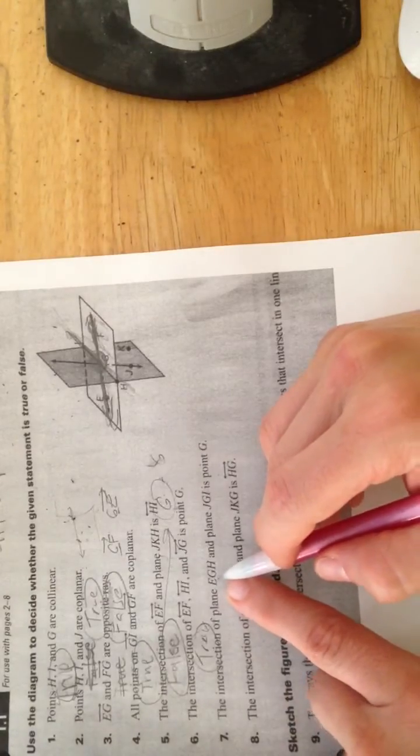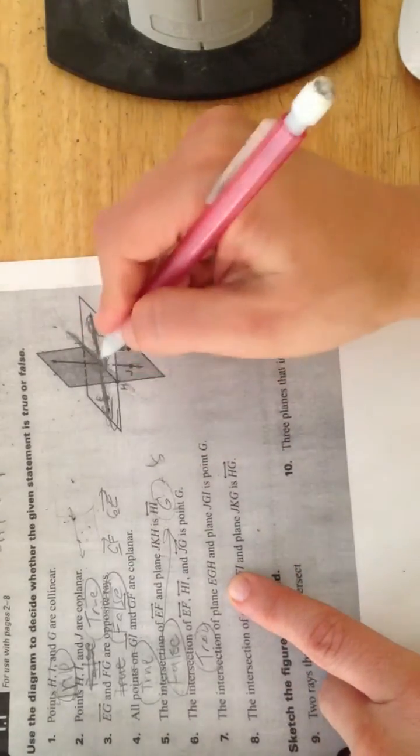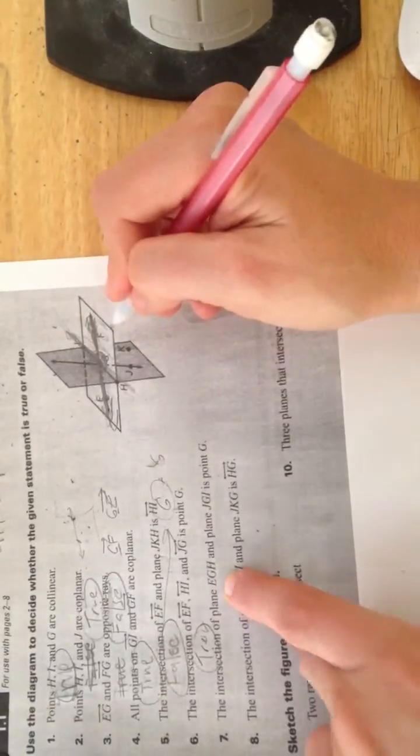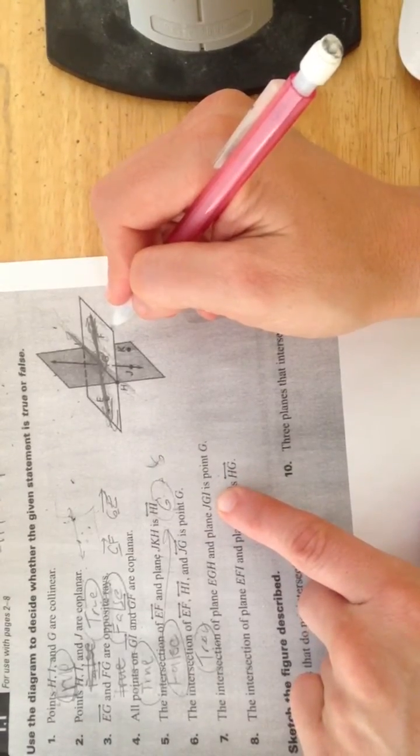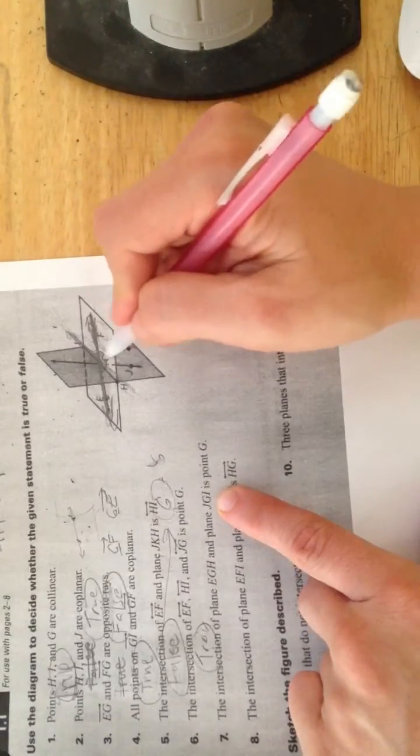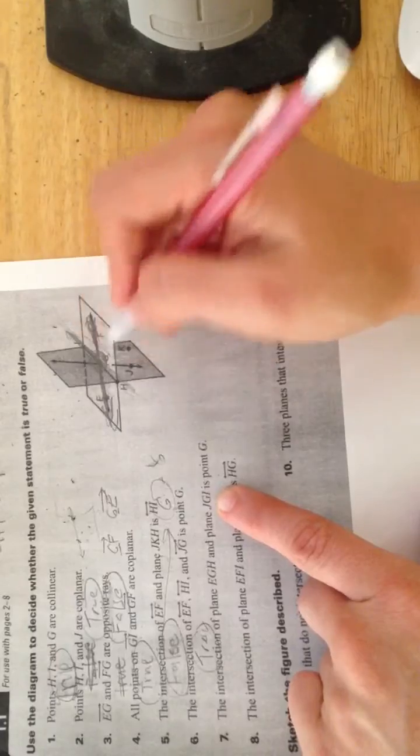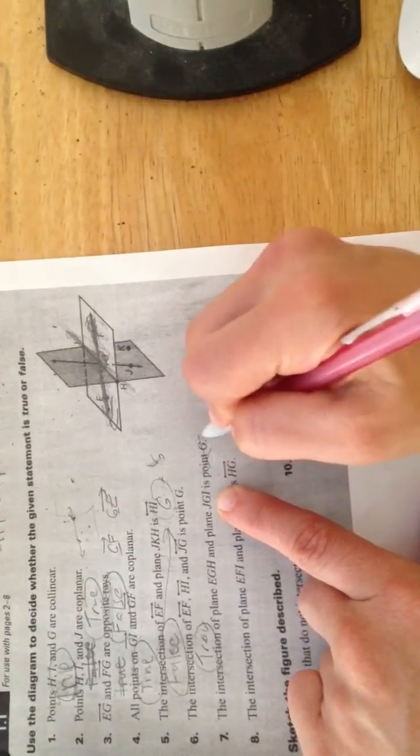Here they have the intersection of plane EGH, which is this plane here, and plane JGI, the other plane is point G. That's not true. They have more than that.